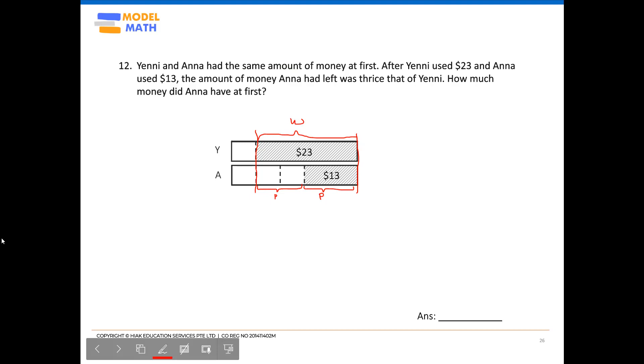So from here, we can actually just simply apply that part equals whole minus part, whereby we are looking for the unknown value of these two units. So the two units, which is one part, would be the whole, which is $23 minus $13, which is the other part, which would give us $10.